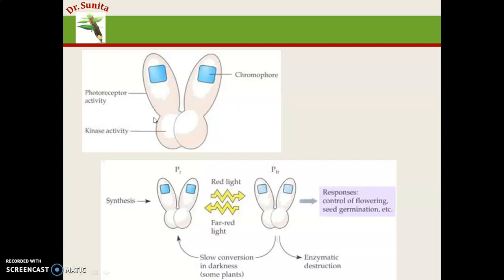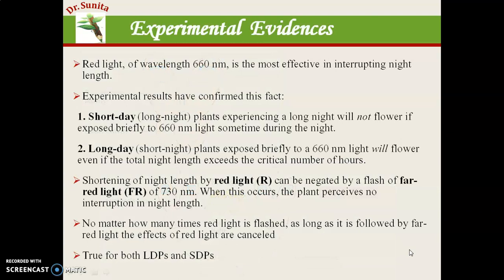The structure of phytochrome has two units present. One part has kinase activity and another has photoreceptor activity. The light-absorbing pigments — chromophores — are present in the photoreceptor part. Phytochrome exists in two forms: PR form and PFR form, both interconvertible. PR absorbs red light and converts into PFR, while PFR absorbs far-red light and converts into PR. PFR is also converted into PR during the night, but the rate of conversion is very slow.